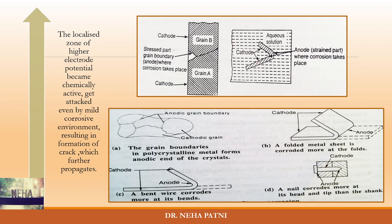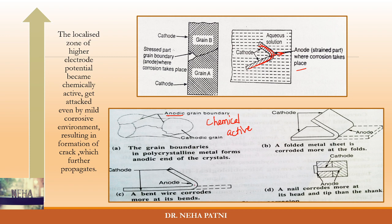Let us see some diagrams — I have followed Engineering Chemistry by Jain and Jain, so you may refer to that book. As you can see, if a particular area has been bent, that area becomes the anode because it is the strained part where corrosion will take place — specifically at the area under stress. Similarly, when two grains are there, the grain boundary basically becomes the anode because it is the localized zone of higher electrode potential, making it chemically active. If you have a folded metal sheet, the grain boundary at the folds will get corroded more.